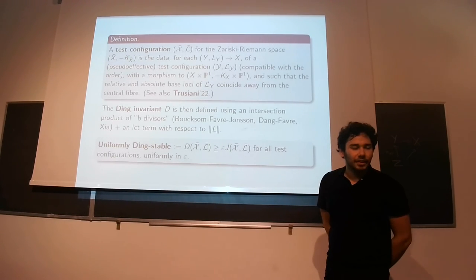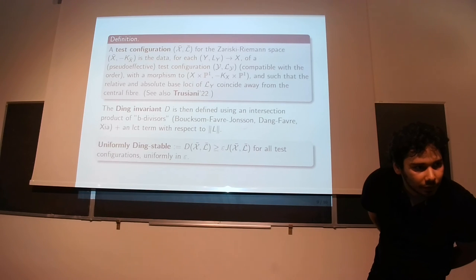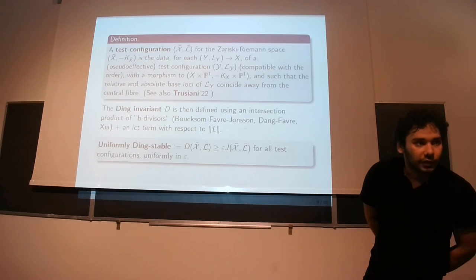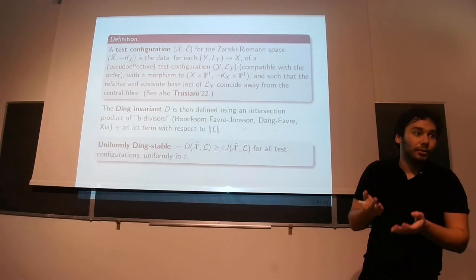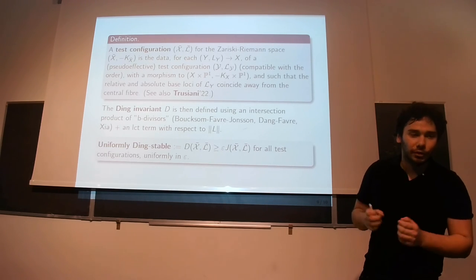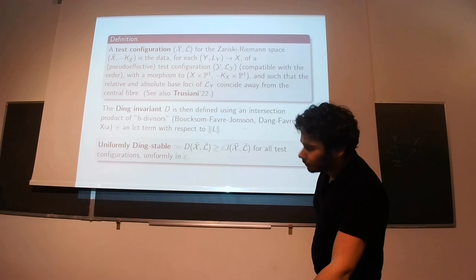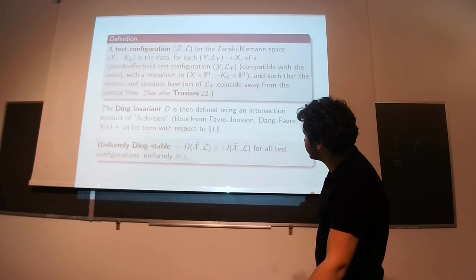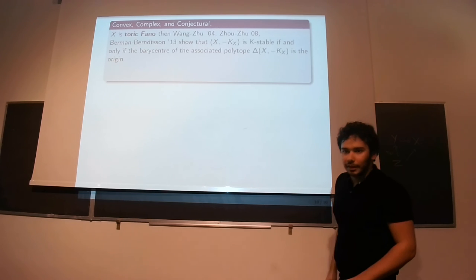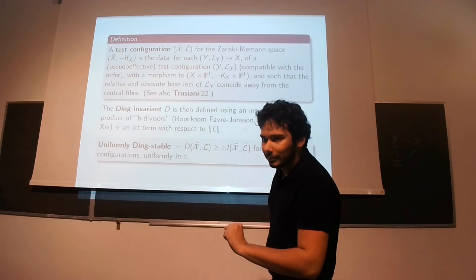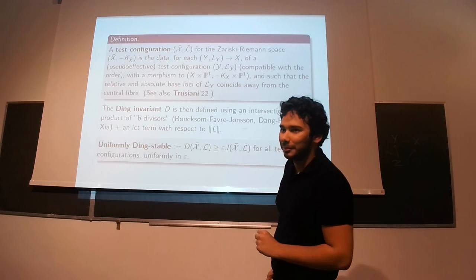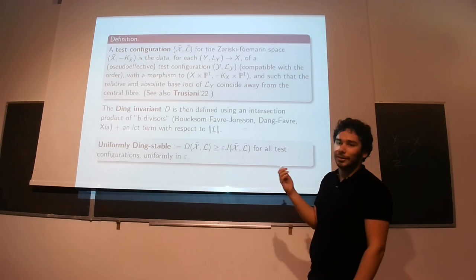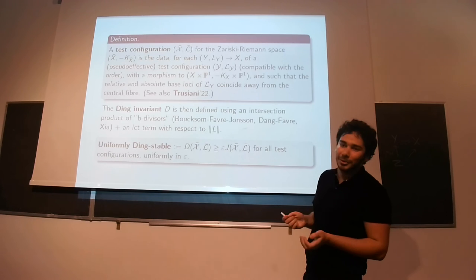[Question: What did you say J was?] I didn't define it. It's also something algebraic. Yes, it is algebraic and it's a positive quantity, so this is really a kind of norm. This should be thought of as a norm. So this is why we call it stability, and we can show that the existence of a unique Kähler metric implies that this invariant is strictly positive.